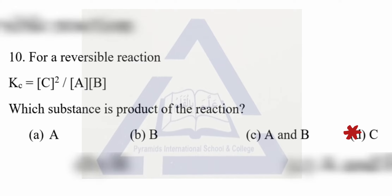The last MCQ — for a reversible reaction, which substance is the product of the reaction? As you know, product concentrations are always written in the numerator, so in this case the product is C, and option D is correct. Do question two by yourself, as all answers are given in different topics of your chapter.